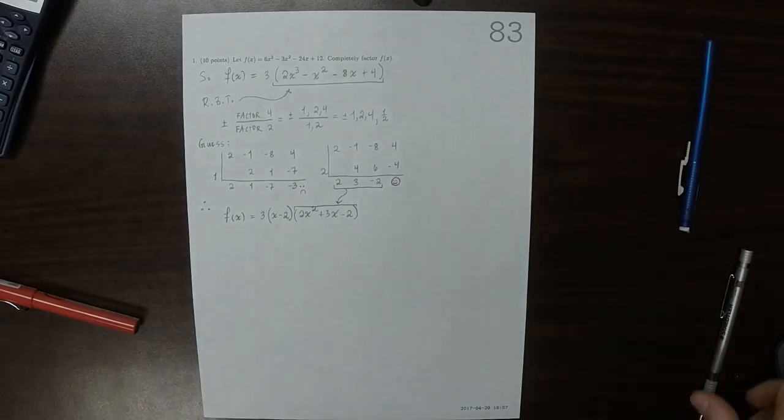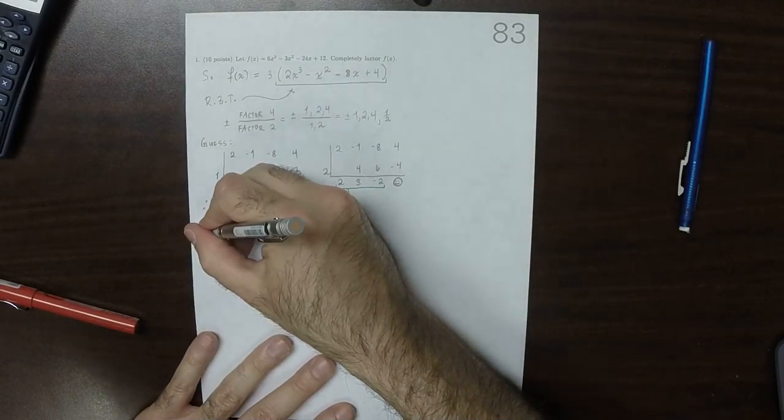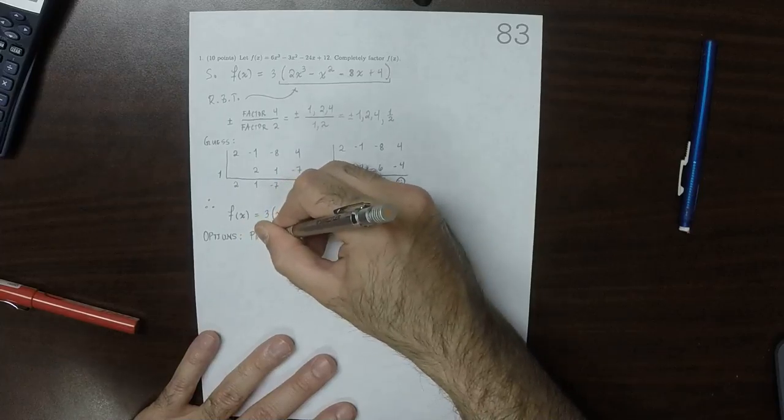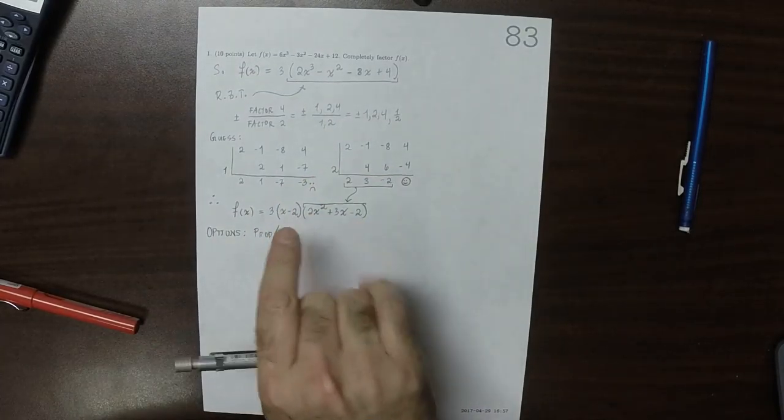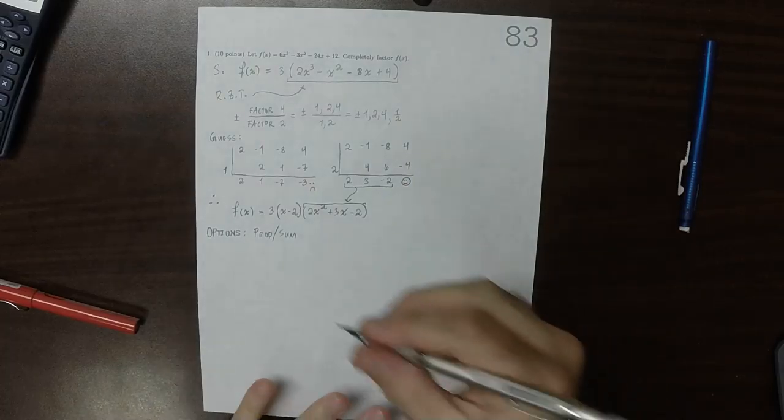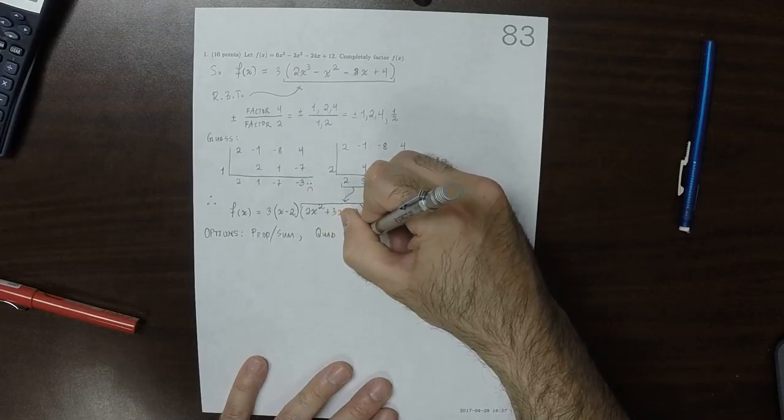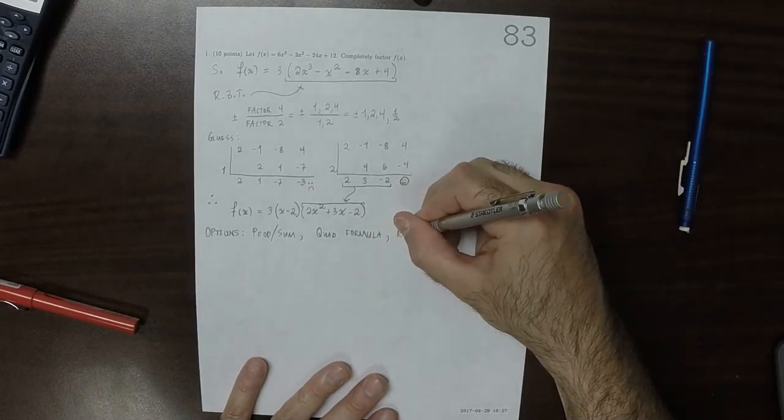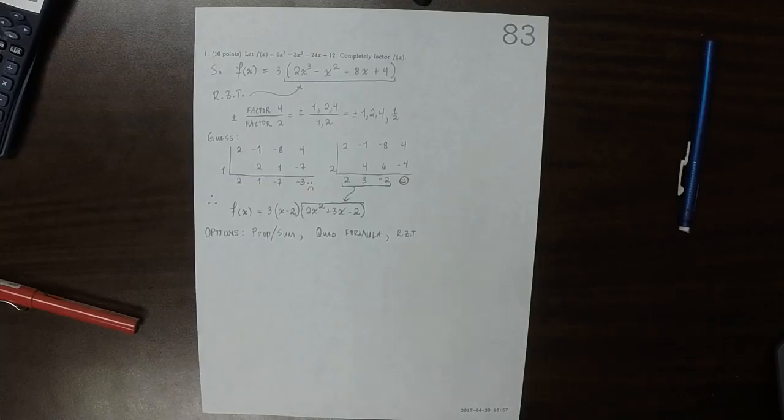Okay, so then we've partially factored f. So now we're going to continue factoring f. So here's some options. So now we need to factor this part. So one option is the product sum bit, where you ask, can I think of two numbers whose product is this and whose sum is that? Another option would be to use the quadratic formula. That's always going to work for a quadratic. Another option is to use the rational zeros theorem again on that part. So any one of them would work, but just for variety's sake, I'll do the rational zeros theorem again.